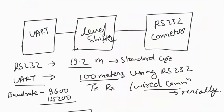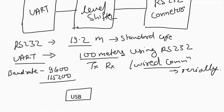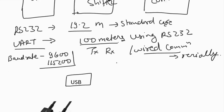We tried to figure out a complex diagram. We saw that the RS-232 is a 19.2 meters standard, but it works in UART until 100 meters. One thing I forgot to mention is the standard baud rate, which is 9600 and 5200. These are the two standard baud rates.